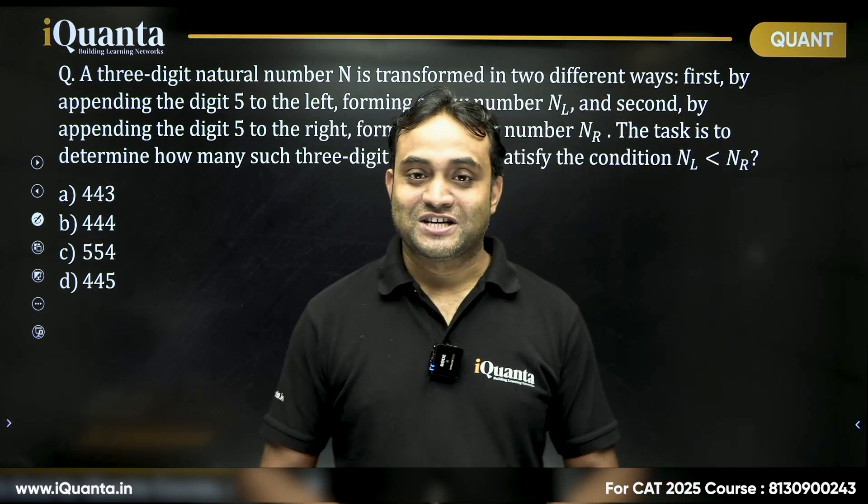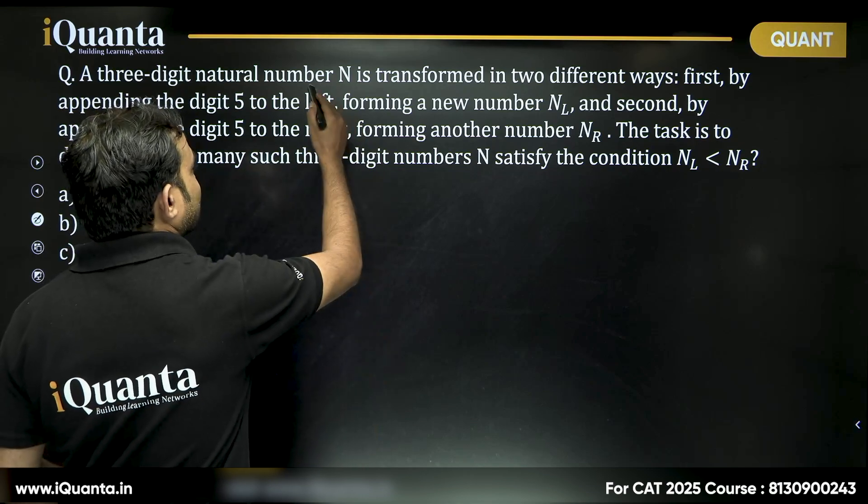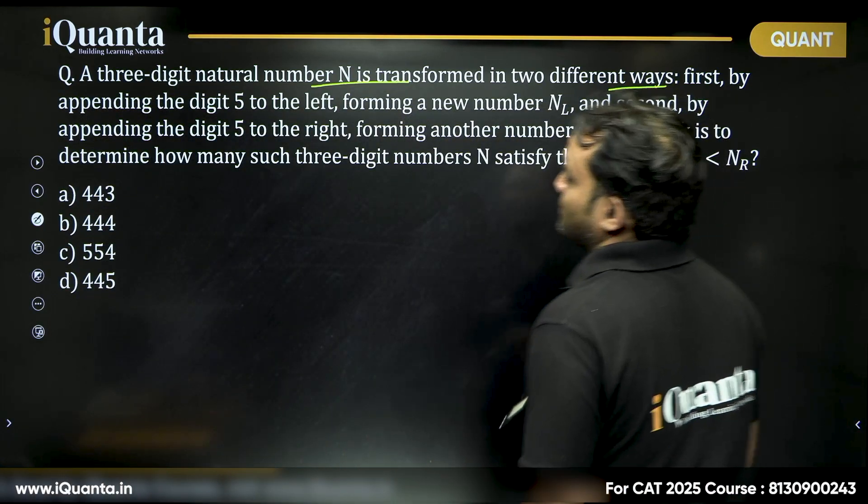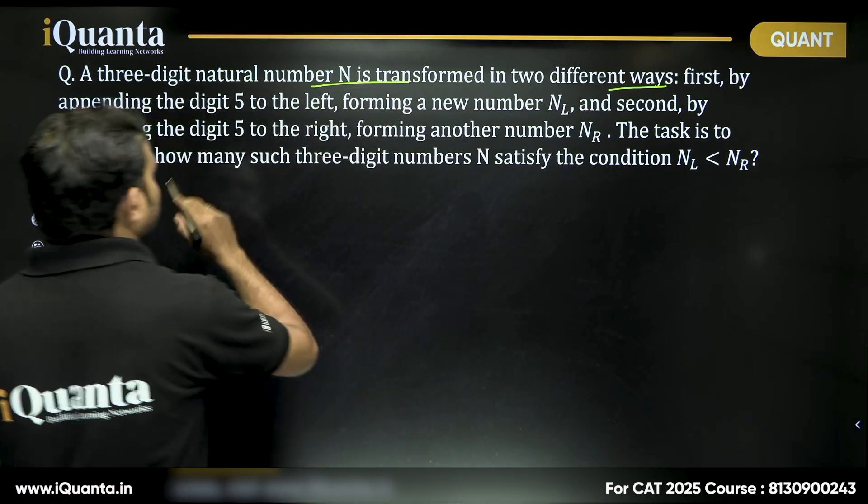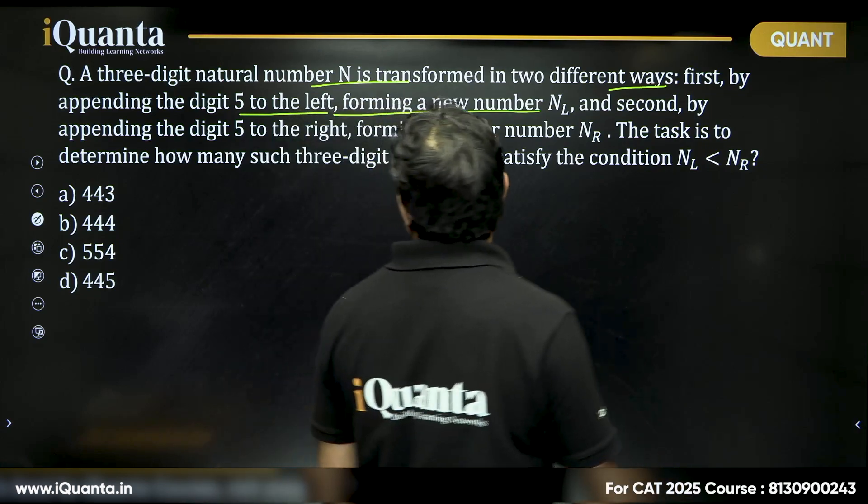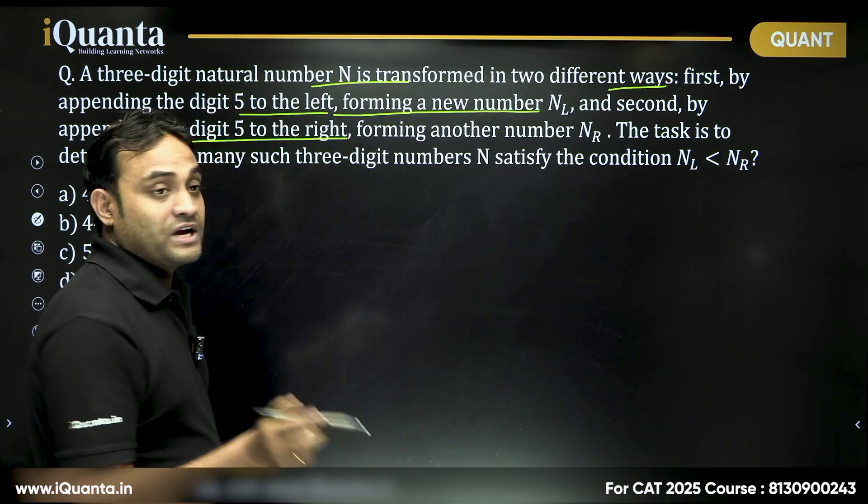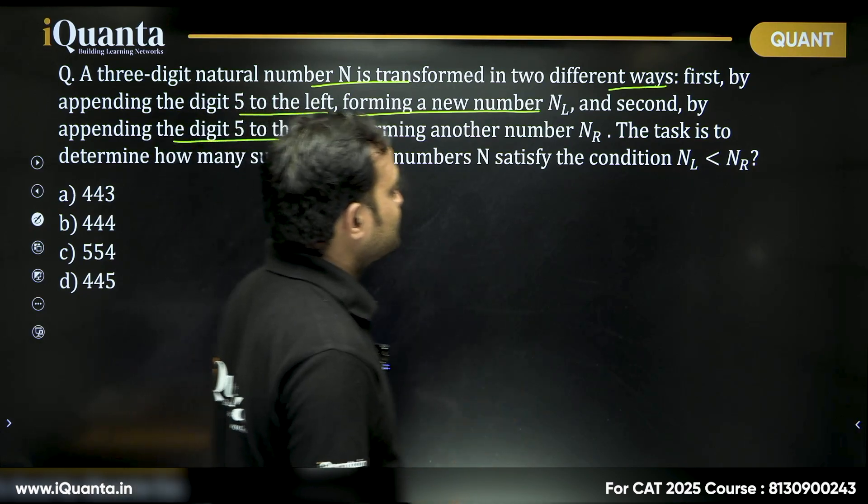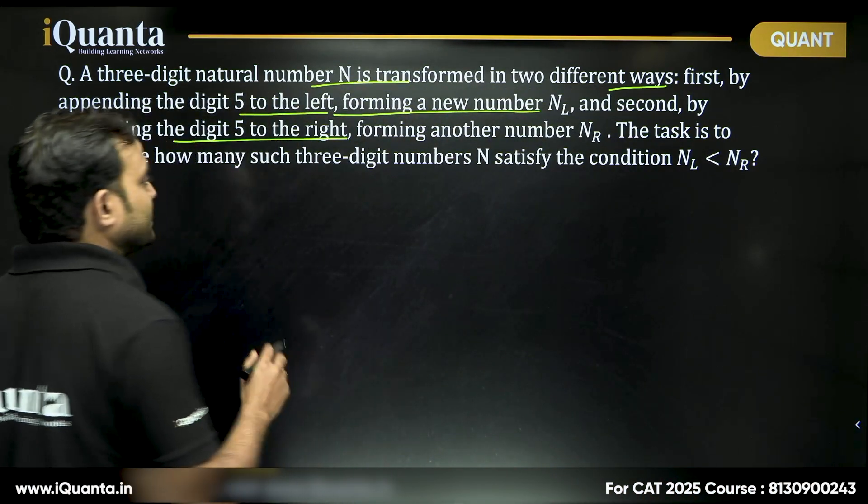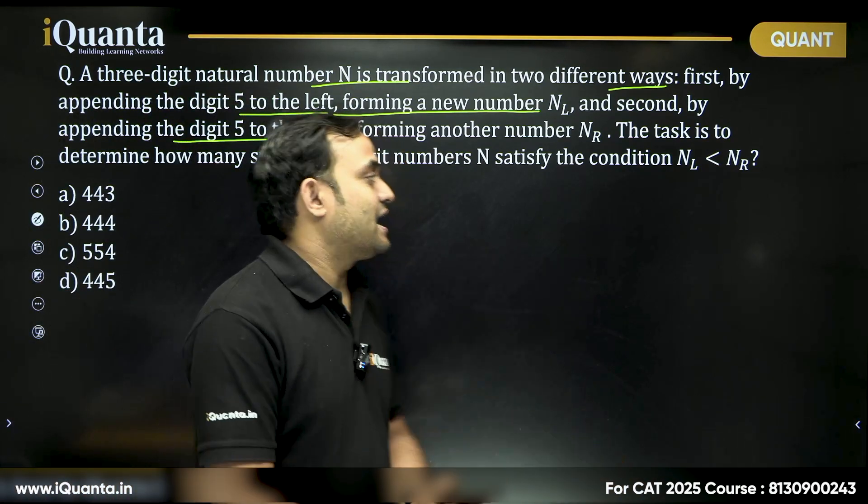A really interesting question, right? Let us discuss this. A three-digit natural number n is transformed in two different ways. First, by appending the digit 5 to the left forming a new number nL and second, by appending the digit 5 to the right forming another number nR. The task is to determine how many such three-digit numbers n satisfy the condition nL is less than nR.